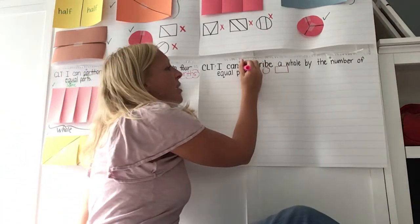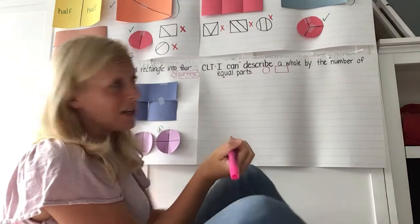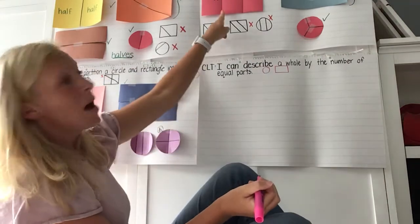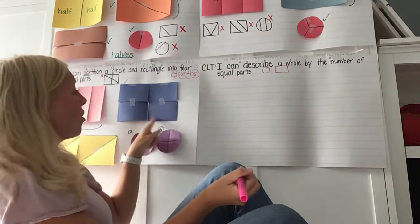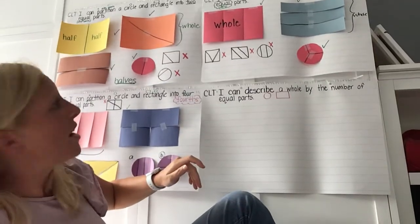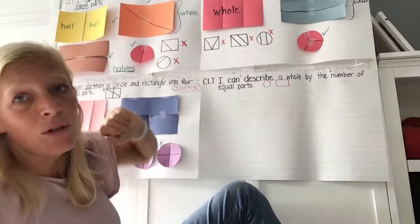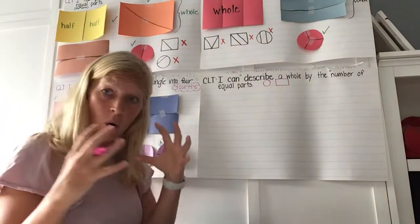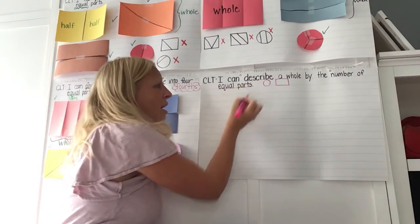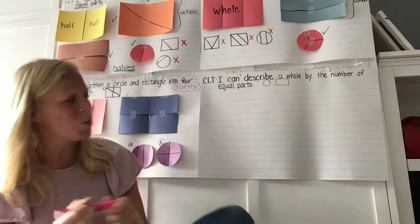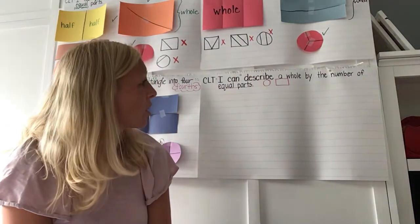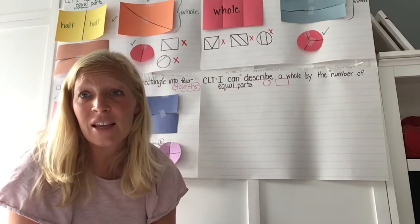So, friends, that word describe means we're going to tell all about it, right? We're going to tell about a whole, and we've got a lot of work with wholes this week. We've got our whole rectangle divided into halves, and again with our thirds. We're going to be describing that whole by the number of equal parts that we have. We talked about words like thirds, halves, and fourths, and we are going to be using those today to describe these wholes.